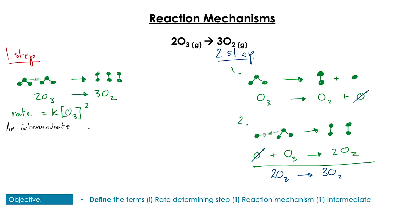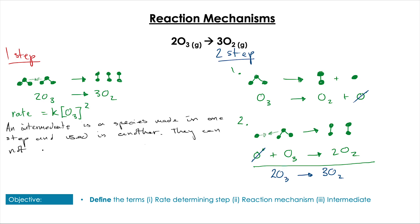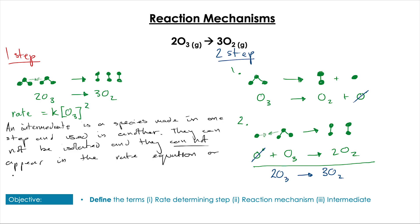Between step one and step two we had an intermediate. An intermediate is a species that's made in one step of a reaction and cannot be isolated — it is then used in another step of the reaction. These are very reactive, sometimes theoretical species that exist between steps and are instantly used up. They cannot appear in the overall rate equation or in the overall equation itself.